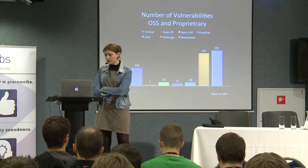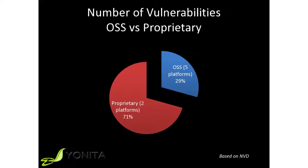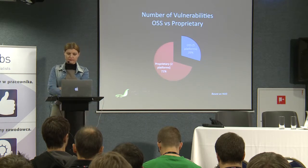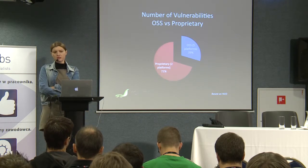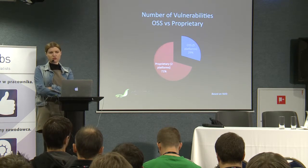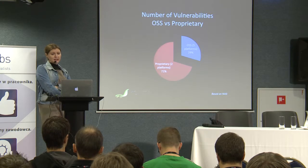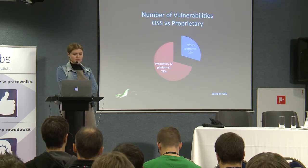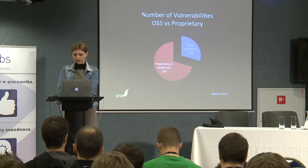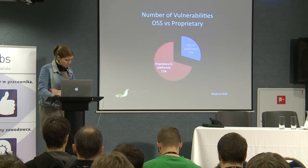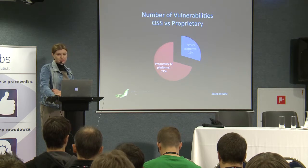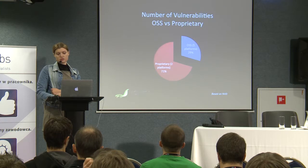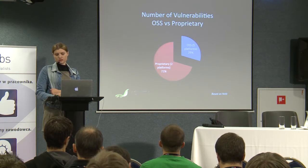When we compare open source and closed software, it turns out that for the five open source platforms they have only around 30% of the total vulnerabilities, while proprietary software has twice as much. That's pretty impressive statistics for open source — it seems that open source containers are much more secure.